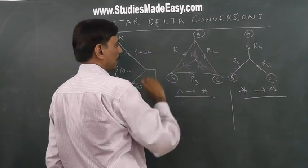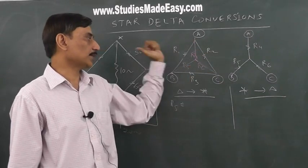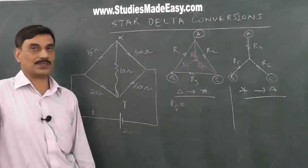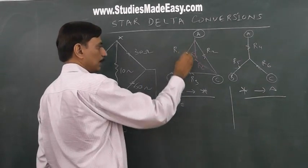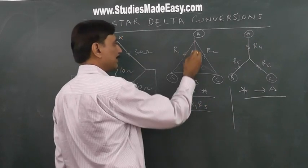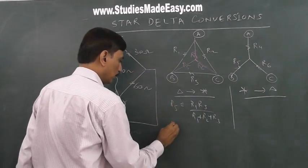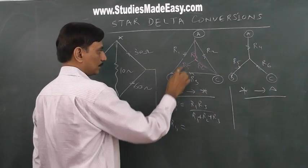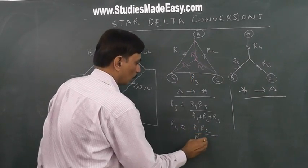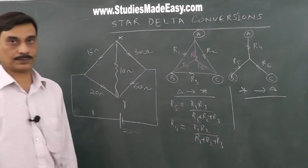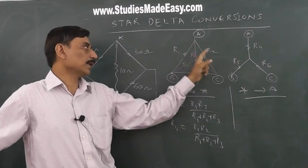For delta to star conversion, suppose I have to find R5: multiply the two adjacent side resistors R1 and R3, then divide by the sum R1 plus R2 plus R3. Similarly, R4 equals R1 times R2 over R1 plus R2 plus R3. And R6 equals R2 times R3 over R1 plus R2 plus R3. The denominator always remains the same sum of all delta resistances.